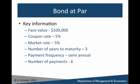So first, what's a bond at par? There's some key information when you take a look at any bond. The face value in this case is $100,000. The coupon rate is 5%, the market rate is also 5%, and the number of years to maturity is 3. We have a semi-annual payment frequency, which means if you have a 3-year bond that pays coupons twice a year, we're going to have 6 payments — in other words, 3 times 2.